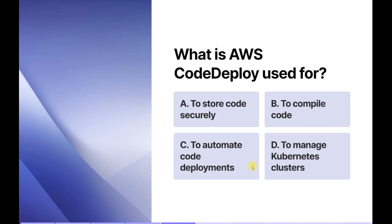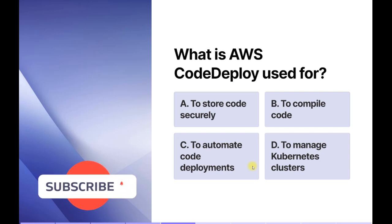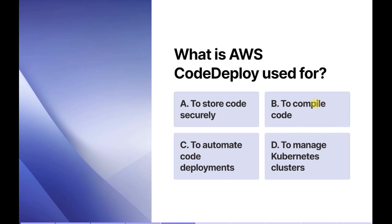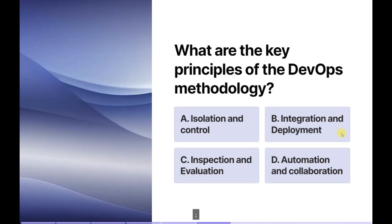To store code securely — for that we have AWS CodeCommit, which helps us securely store and manage code in a version-controlled repository. To compile code — CodeDeploy is mainly focused on deploying already compiled or packaged code, not for compiling. To automate code deployments — yes, this is the correct answer and the main feature of AWS CodeDeploy. To manage Kubernetes clusters — for that we have EKS (Elastic Kubernetes Service). So the correct answer is option C: to automate code deployments.